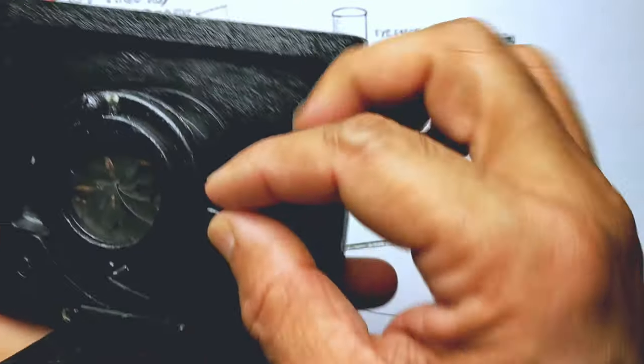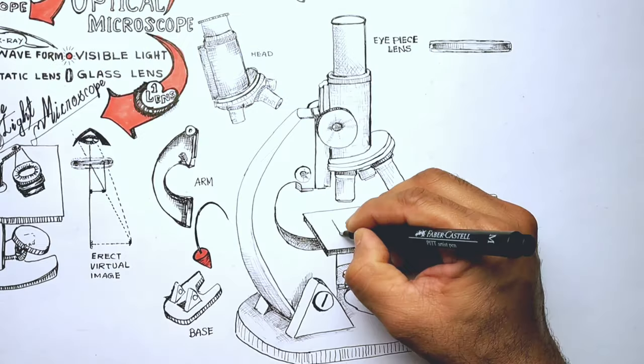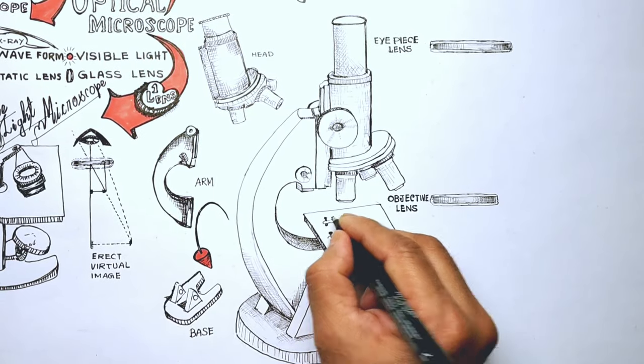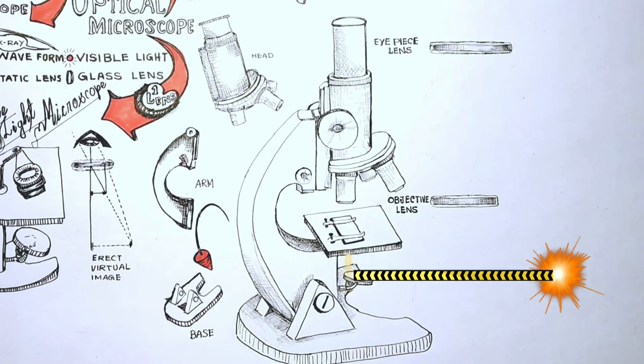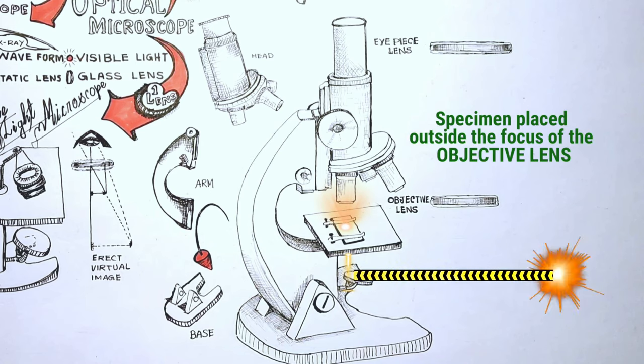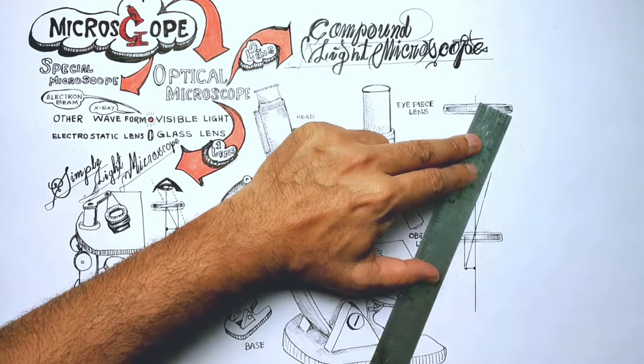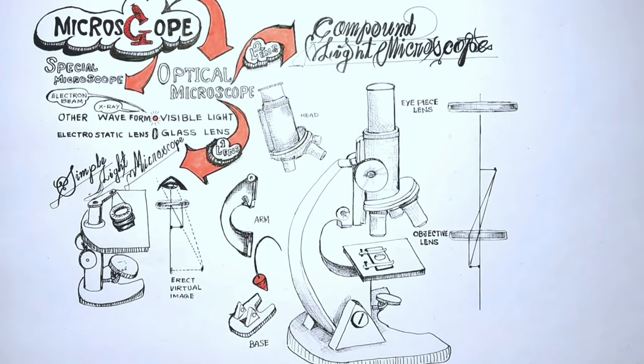Now as we have got ourselves acquainted with the structure of the microscope, let's have a look at the working of the microscope. The specimen is placed on the stage and illuminated from below, just outside the focus of the objective lens. As told earlier, a real inverted and magnified image is formed.